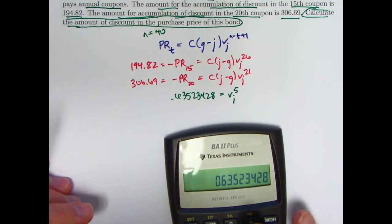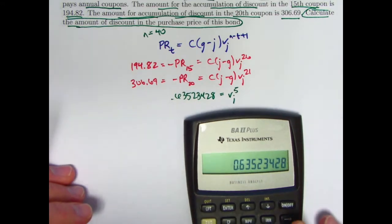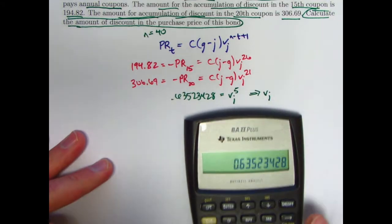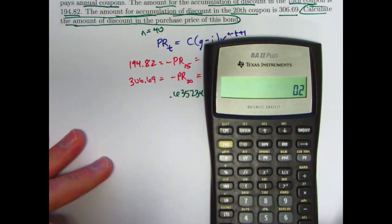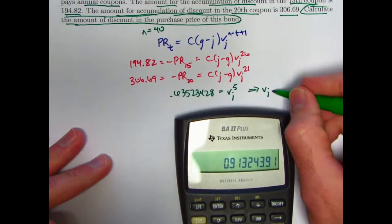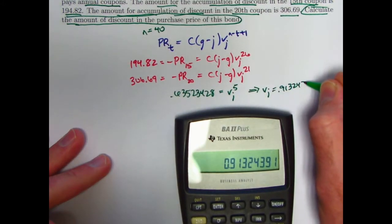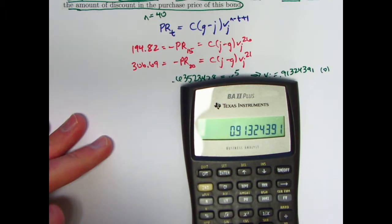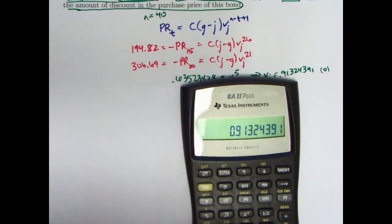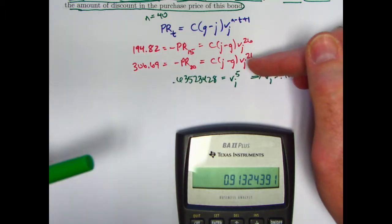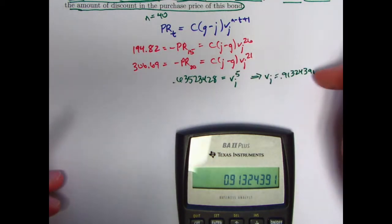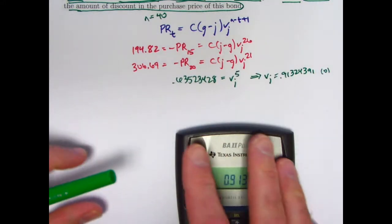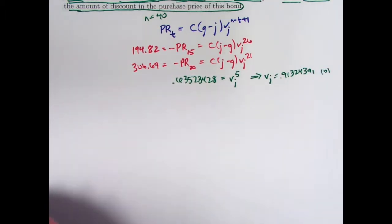So looking at this, this looks like it could be useful. For one thing, I could use it to find v_j. Raise both sides to the one-fifth power, which would be the 0.2 power. Raise this to the 0.2 power. V_j looks like to be about 0.91324391. Probably is worth storing this in a register. I'm going to store it in register 0. We could also solve for the quantity C times j minus g if we raise this to the 21st power, plug it back in there, and then divide both sides by it. Will that be helpful, though? Let's think about why that's helpful before we actually do it.